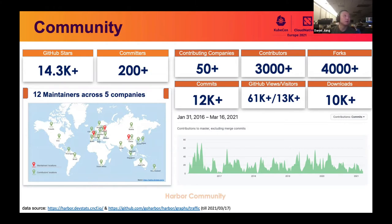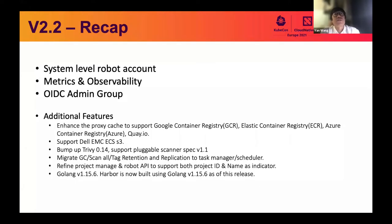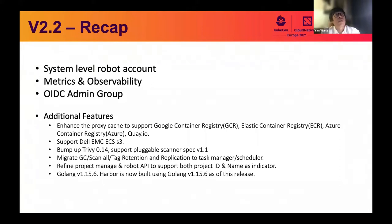I'm going to pass the mic to Yan to give us a recap about the recent version 2.2 release. Thanks, Daniel. I'd like to give you a brief introduction about the latest major release of Harbor, version 2.2. There are two anchor features in this release: system robot accounts and metrics. The system-level robot account is targeted to manage multiple projects with one robot, and the metrics feature is targeted to expose the system and runtime information of the Harbor instance.